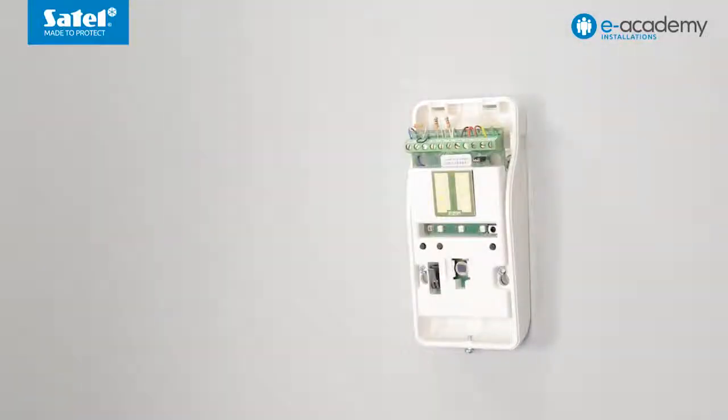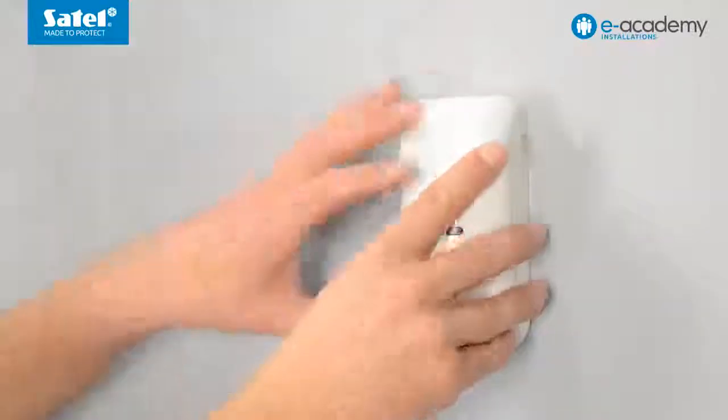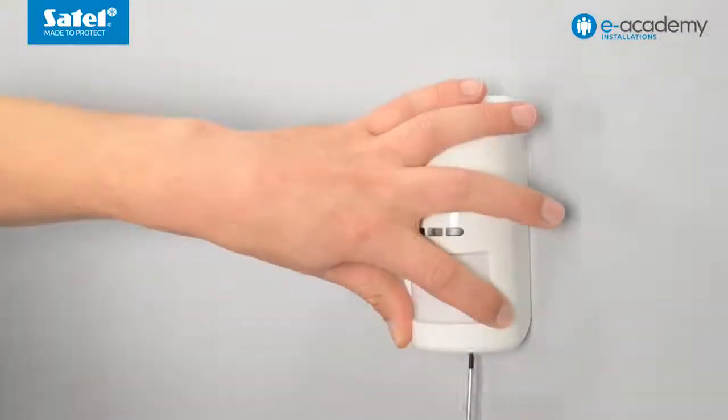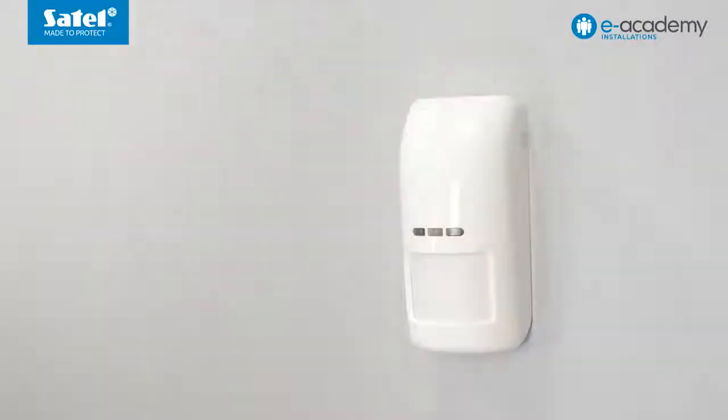Close the detector enclosure to complete the installation. To do this, insert the detector cover catches into the holes provided at the top of the detector base. Then close the enclosure and tighten the closing screw at the bottom of the enclosure.